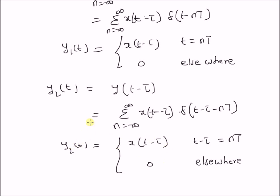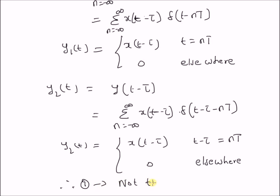So clearly, y1(t) equals x(t minus tau) when t equals nT, which is not the same as y2(t) equals x(t minus tau) when t minus tau equals an integer multiple of T. Thus, the sampler or the system in equation 1 is not a time invariant system — in other words, it is a time varying system. Therefore, equation 1 is not time invariant. Thanks for watching.